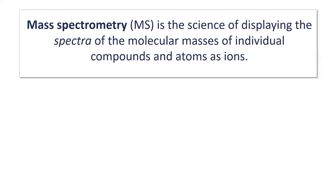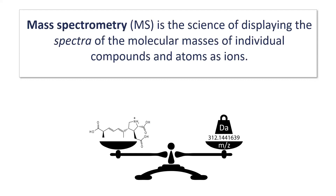First of all, what is mass spectrometry and why is it so important? One thing we always need to keep in mind is that we measure ions - this is very important to always keep in mind - we measure ions with mass spectrometry.